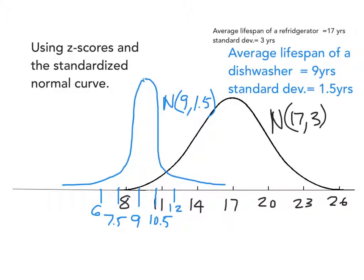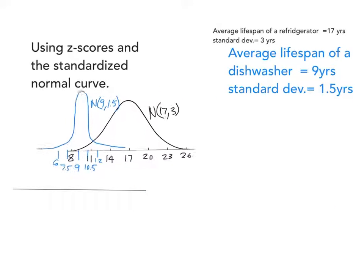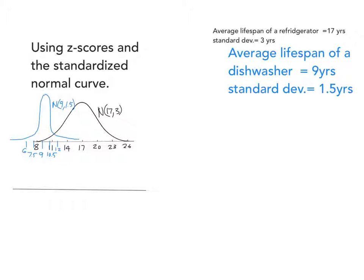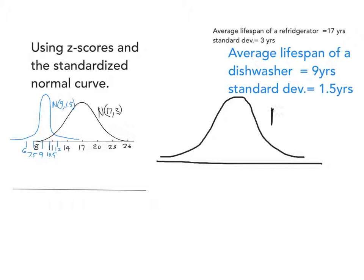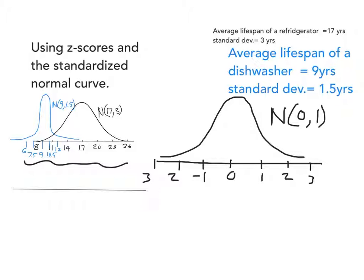So what does this have to do with z-scores and standardized normal curves? Wouldn't it be easier if we could take those two curves and condense them into just one single curve? I can make one normal curve and place both products on the same curve — the most simple normal curve where 0 is the mean and 1 is the standard deviation. This is the standardized normal curve. Its biggest power is that it takes any normal curve and snaps it into a common ground, letting us compare two different situations.